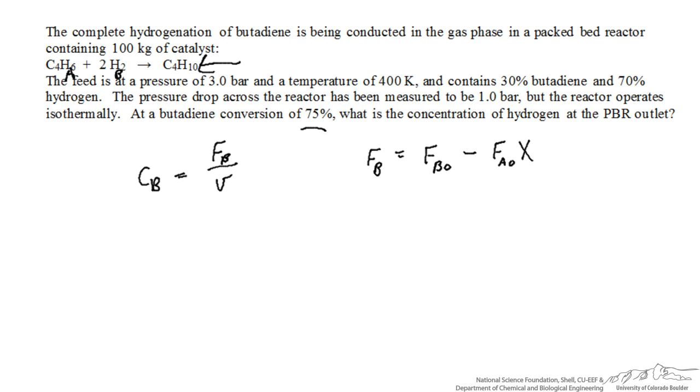When we plug in the initial feed rate and the conversion of 75%, for every mole of butadiene that is reacted, we react 2 moles of hydrogen based on the stoichiometry, and so we need to place a 2 here. This is our basic expression for FB.